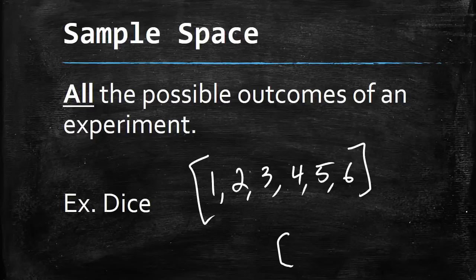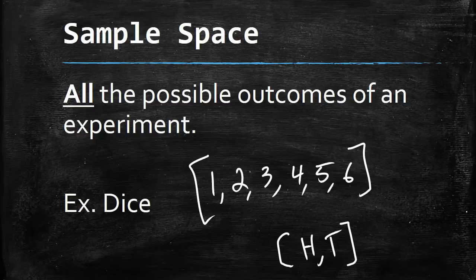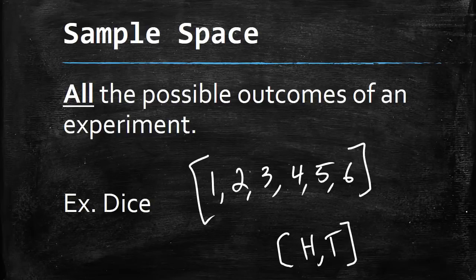Similarly, when you flip a coin, your sample space is just heads or tails. That's what a sample space is - all the possible outcomes of an experiment. We'll look at how to find the size of a sample space later on.